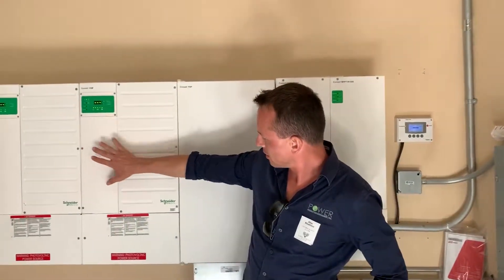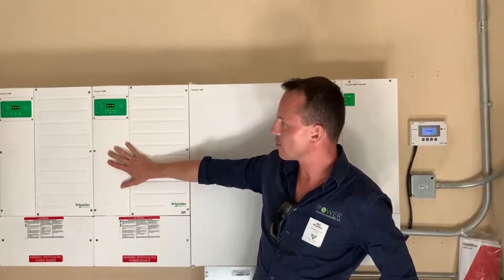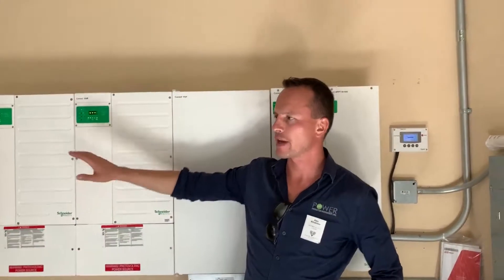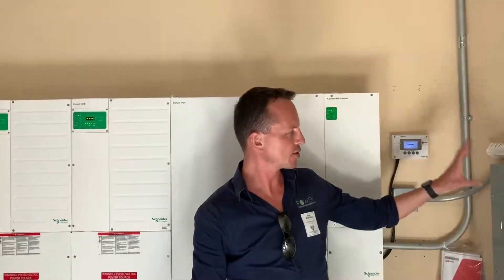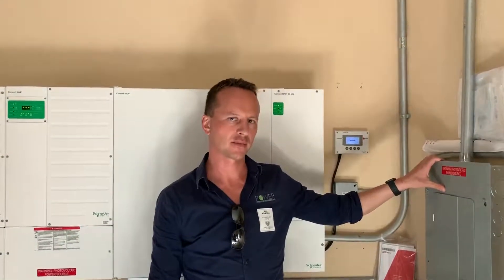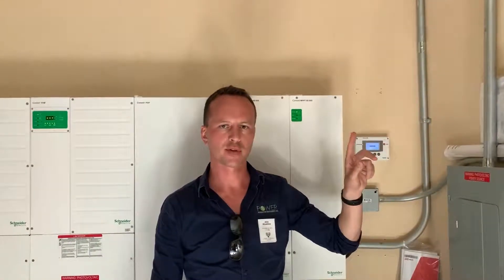The Schneider Electric system manages the batteries, solar, and generator to ensure the air conditioning is always available. However, if the solar components and batteries fail, you may need to manually enable the generator. Here is how to do it.